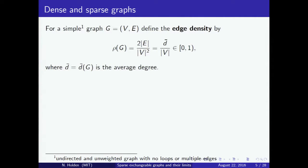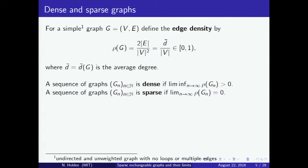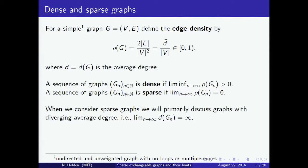We will study the case of dense graphs and sparse graphs separately. If we are given a graph G, we define the edge density to be two times the number of edges divided by the number of vertices squared. This equals the average degree divided by the number of vertices, and it is a number between zero and one. A sequence of graphs is dense if the density is bounded away from zero as n goes to infinity, and sparse if the density converges to zero.